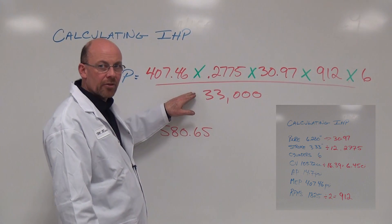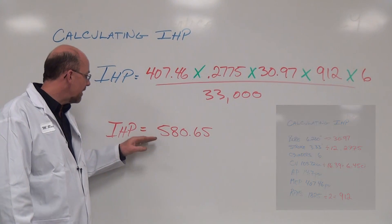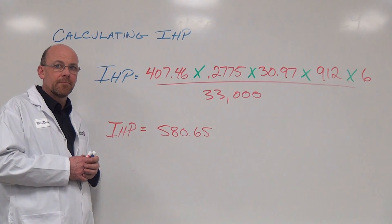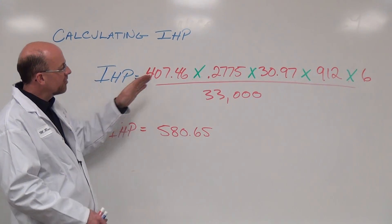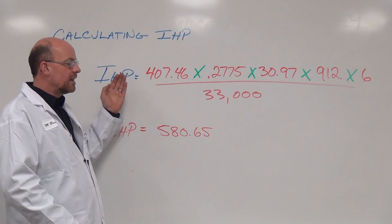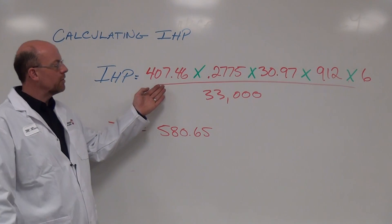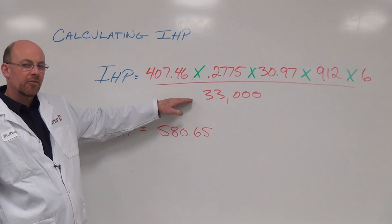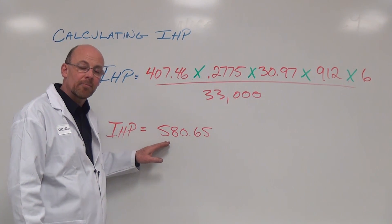Divided by 33,000, this calculates out to 580.65 indicated horsepower, which is based on theoretical values only. Taking a look back at how we established these numbers, we took the given information and applied it into the formula of indicated horsepower, dividing again by 33,000, giving us our 580.65 indicated horsepower.